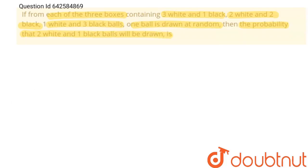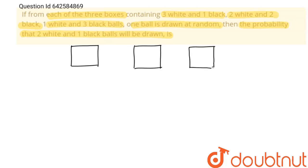Let's solve this problem. According to the question, there are three boxes: box number one, box number two, and box number three. The first box has three white and one black ball. The second box has two white and two black balls. The third box has one white and three black balls.